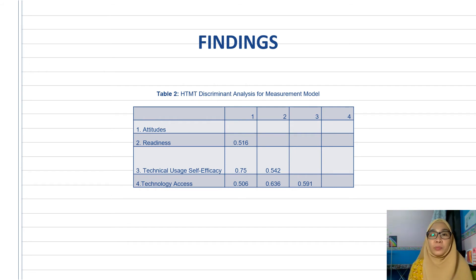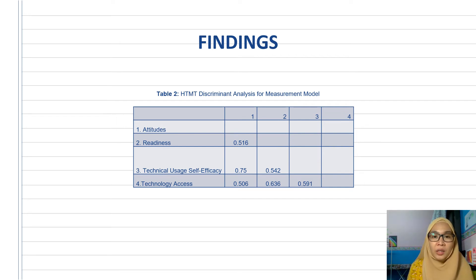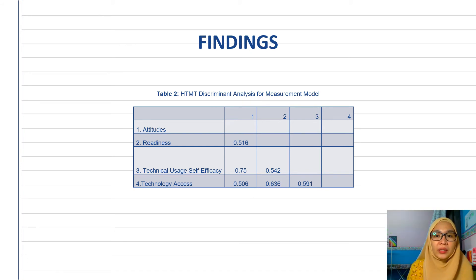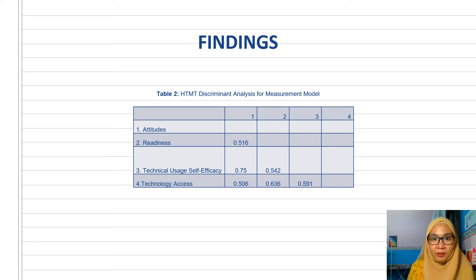We also tested model development using a two-step approach — first testing validity and reliability of the instrument using guidelines from Hair (2019) and Ramaya (2018), then running the structural model to test the hypotheses. For the measurement model, we assessed factor loadings, Average Variance Extracted (AVE), and Composite Reliability (CR). Loadings should be ≥ 0.5 and CR ≥ 0.7. All AVE values exceeded 0.5 and all CR values exceeded 0.7, with only one or two loadings scoring below 0.708.